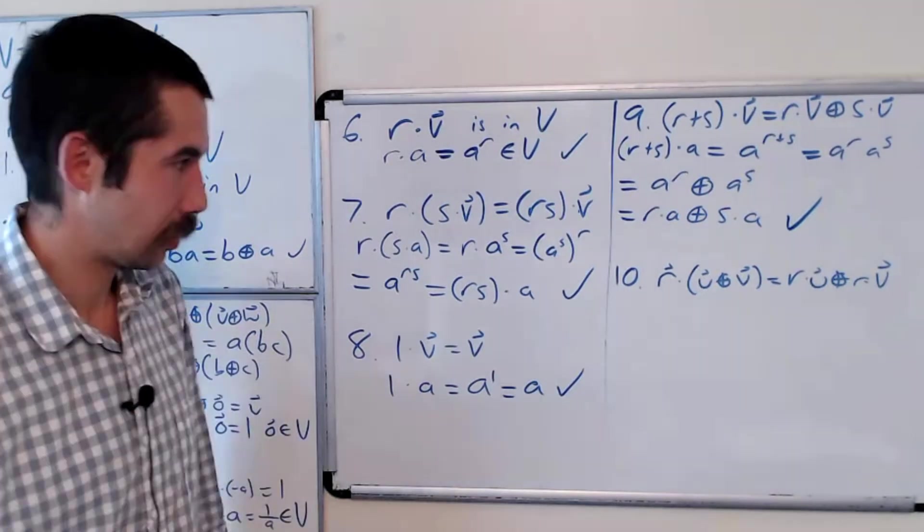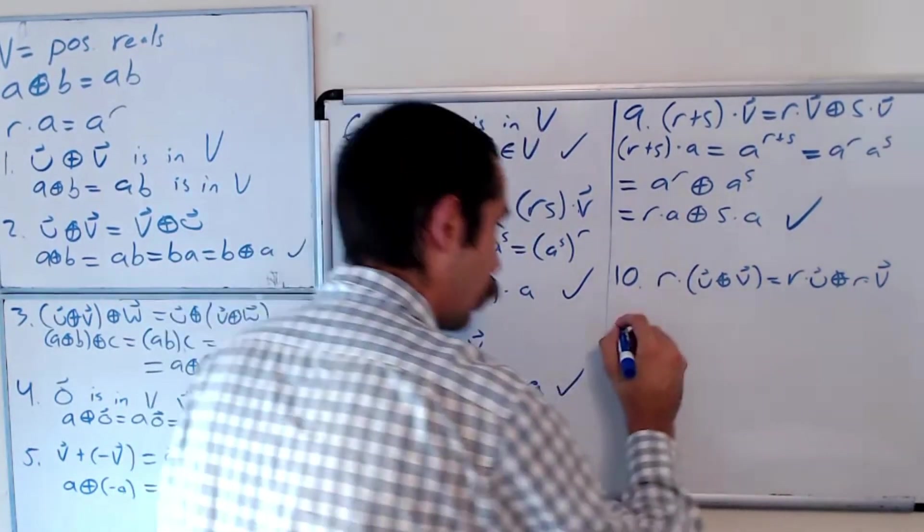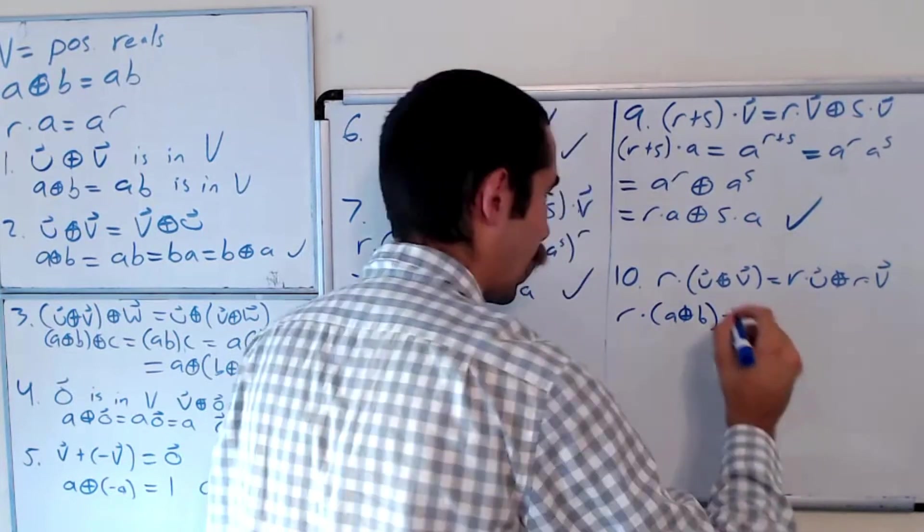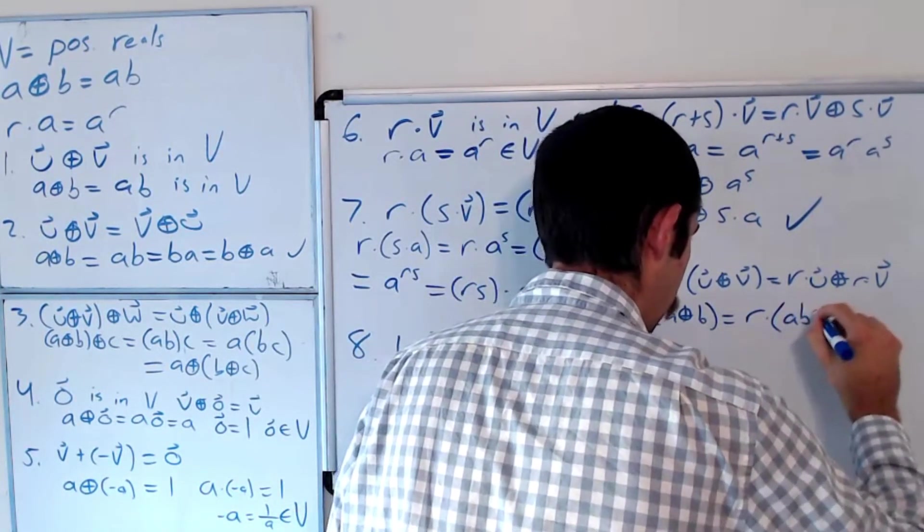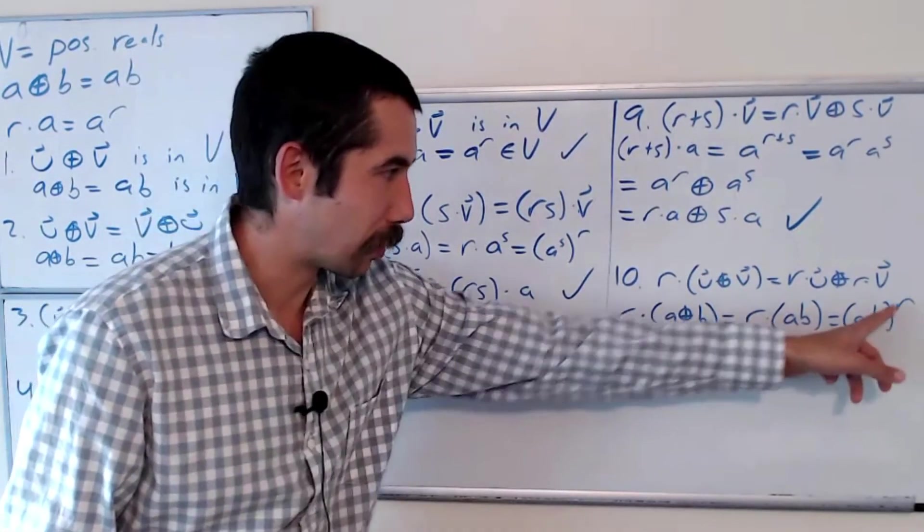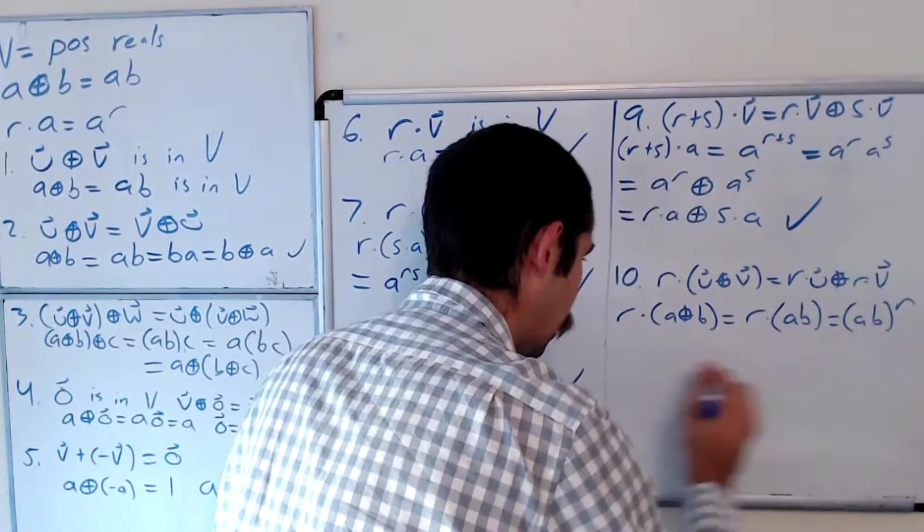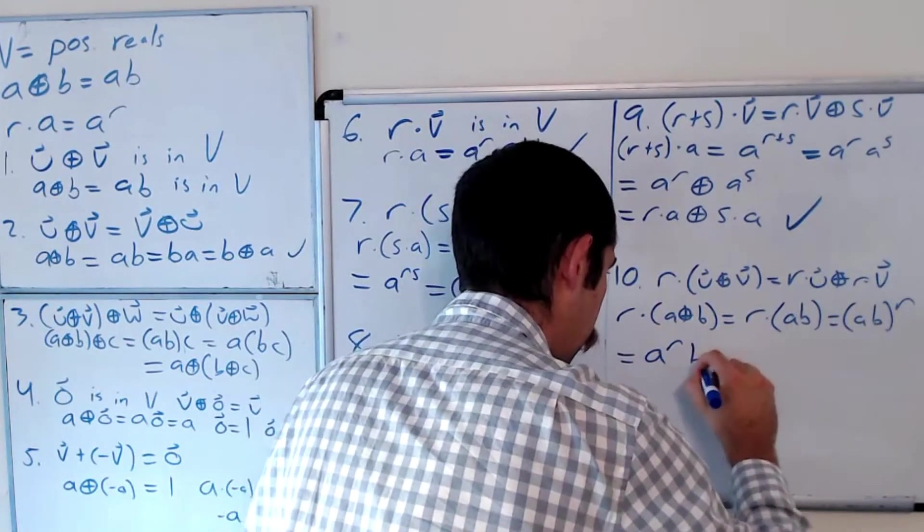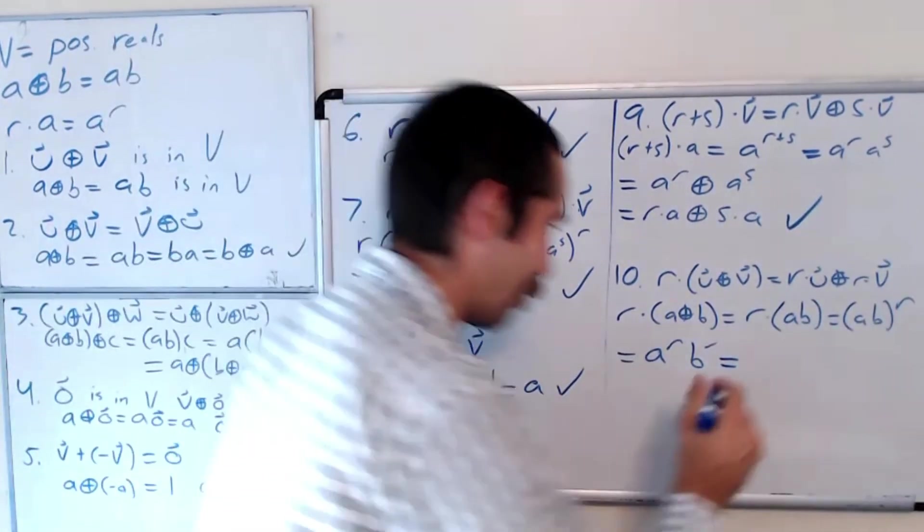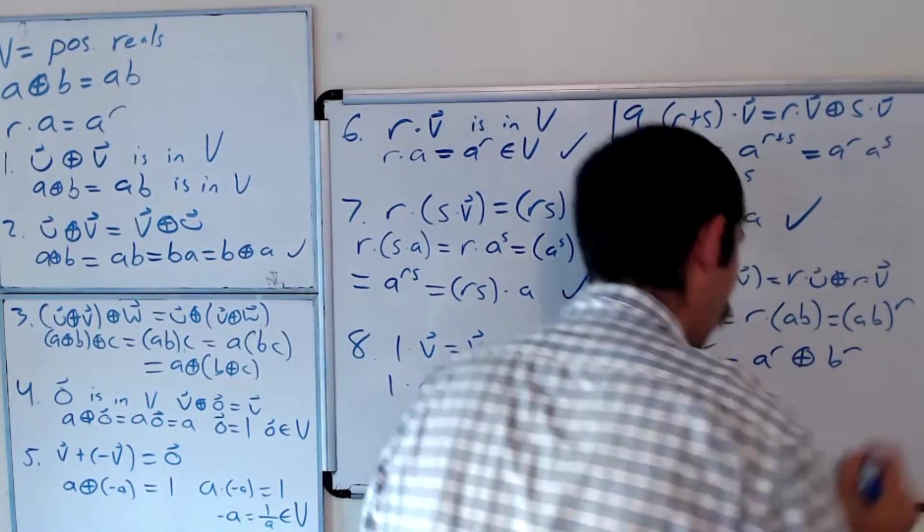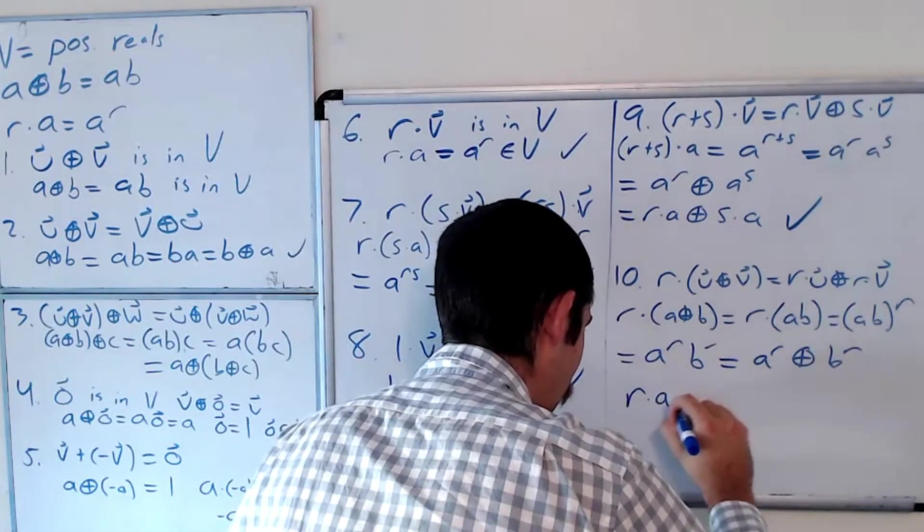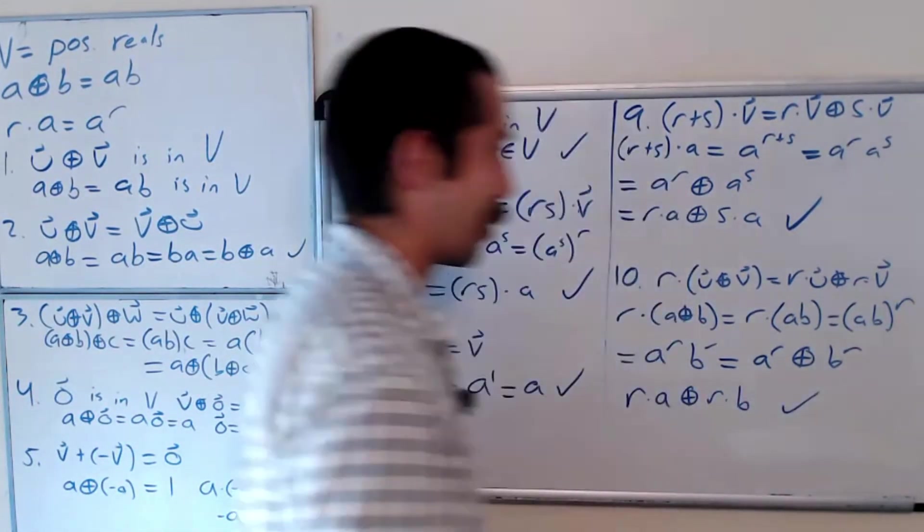And finally, number 10. Let's do R·(A⊕B). We know that's R·(AB), which is (AB)^R. And a property of exponents is we could bring this R to both of the powers, or both of these bases here. So this is equal to A^R · B^R. Multiplication, remember, is plus. So A^R ⊕ B^R. And A^R is just R·A. So this is R·A ⊕ R·B, as desired. So we made it. We did all 10.